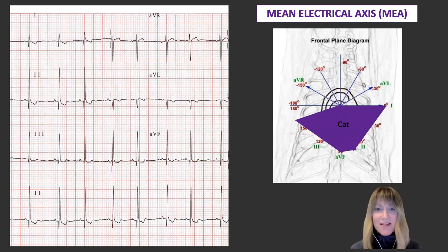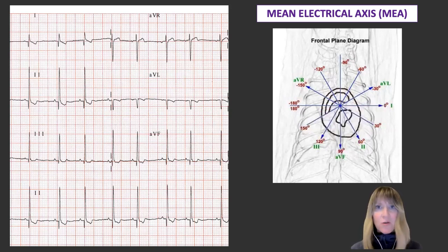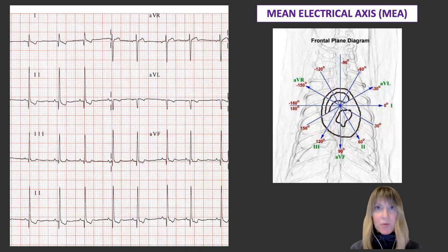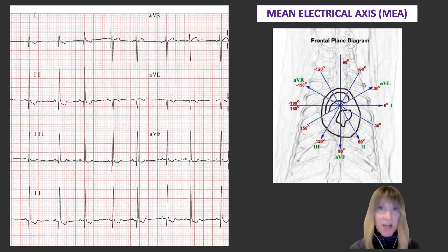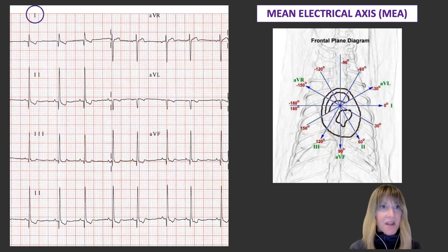Let's work through this ECG of an 11-year-old female spayed golden retriever using a method called the isoelectric method. Step one is to identify which of these frontal plane leads has a QRS complex whereby the negative components — the Q and the S — are roughly equal in height or depth to the positive component, the R wave. Looking at these six frontal plane leads, my eye is drawn to lead one, because the Q and the R are about equal in size. So that's my isoelectric lead.